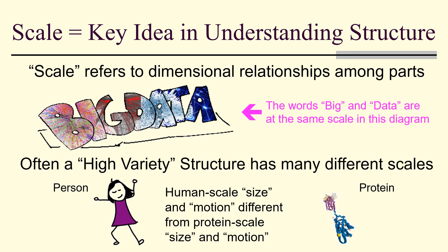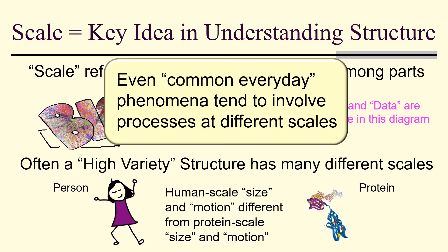So, for instance, size and motion of a human have very different scales from size and motion of a protein. But even common everyday phenomena tend to involve processes at different scales.